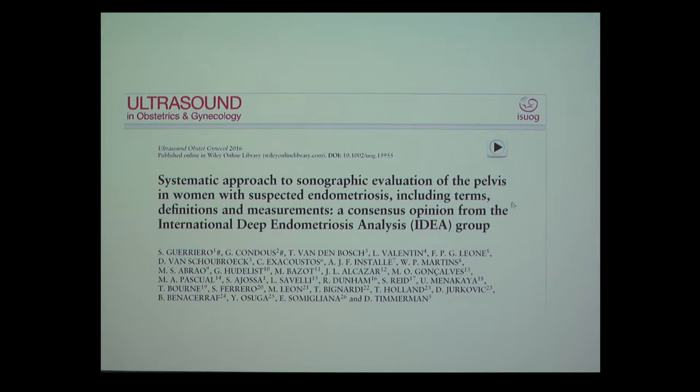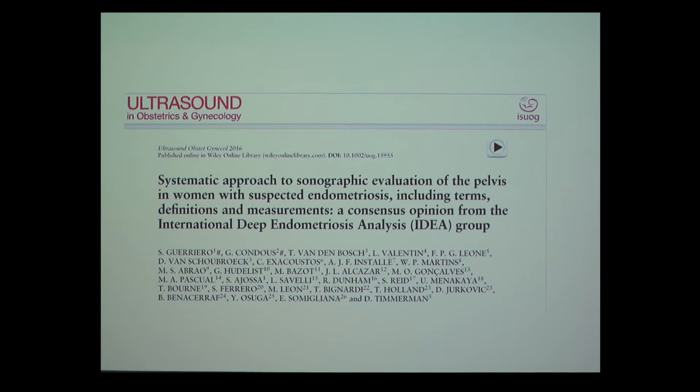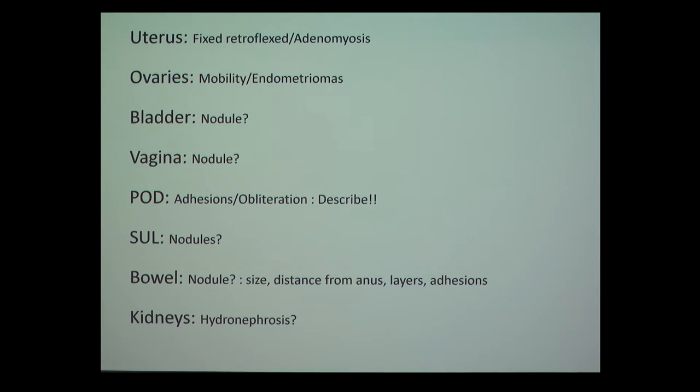Recently, a freely downloadable article was published describing a systematic approach called IDEA — from the International Deep Endometriosis Analysis group. Similar to IOTA for ovarian lesions and MUSA for myometrial lesions, IDEA describes a systematic approach to evaluation of the pelvis in women with endometriosis, covering the anterior compartment (uterus, ovaries, bladder) and posterior compartment (vagina, pouch of Douglas, uterosacral ligaments, bowel, and kidneys).